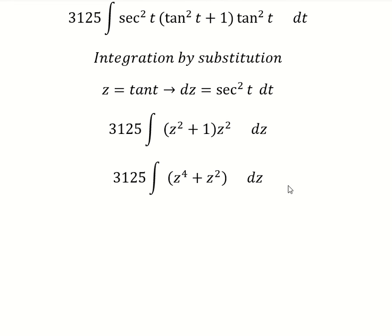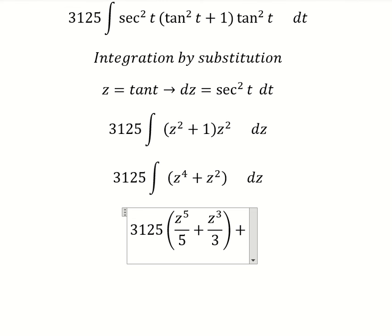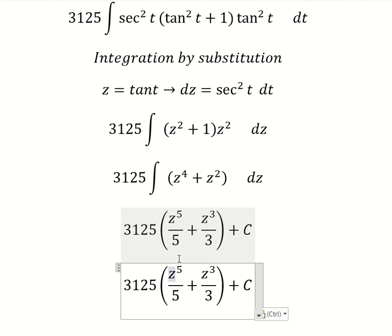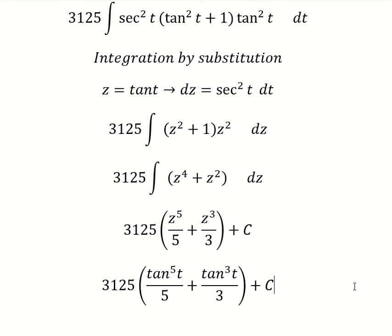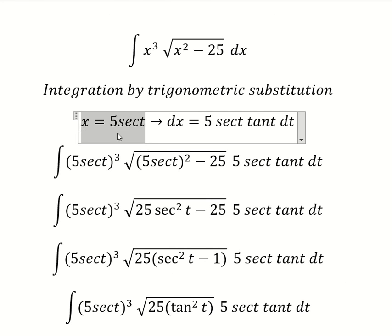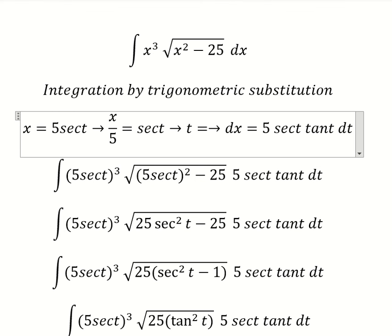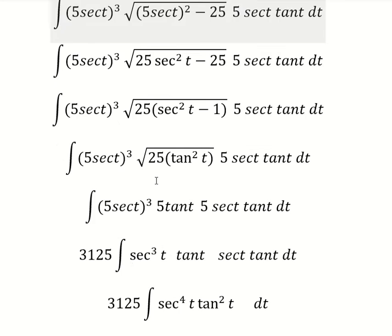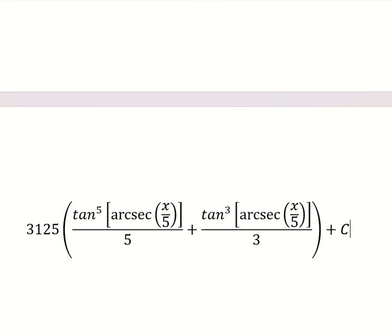So the integral of this gives z to the power of 5 over 5, plus z³ over 3, plus C, where z equals tan(t). Now for t, we divide both sides by 5 and we have t equals arcsec(s/5). So we substitute back to get the final answer in terms of s.